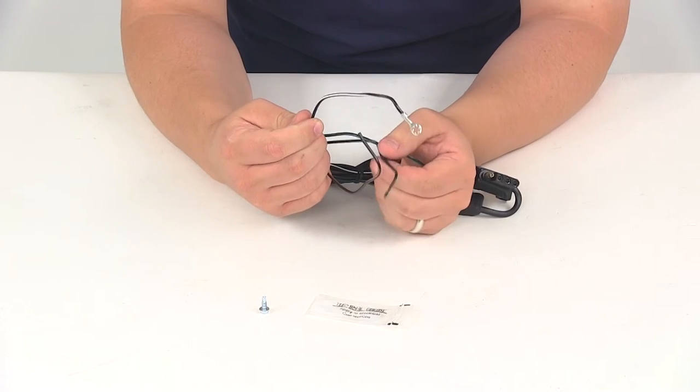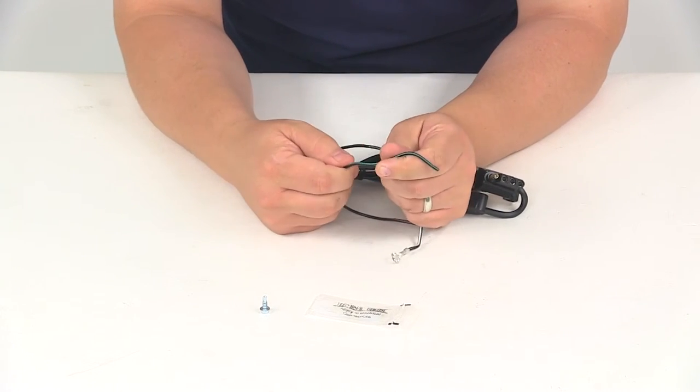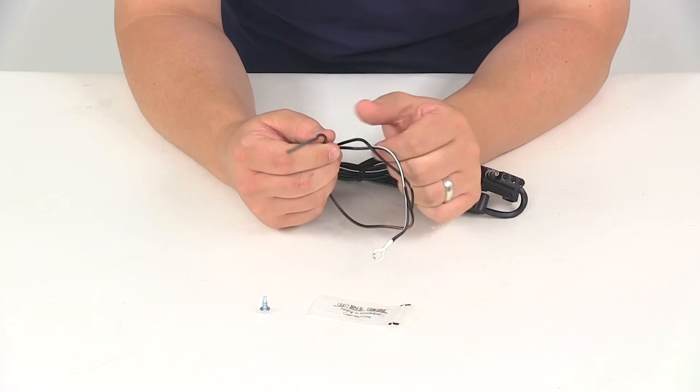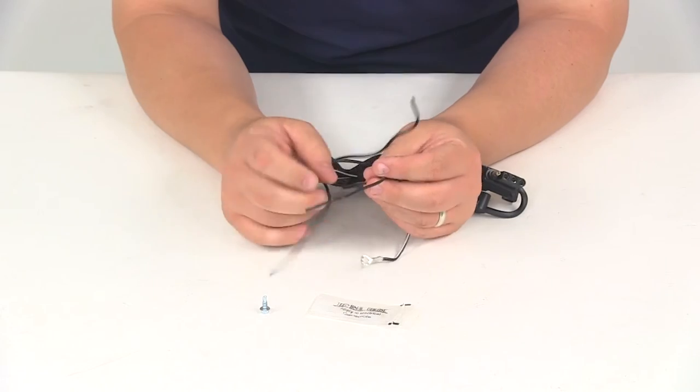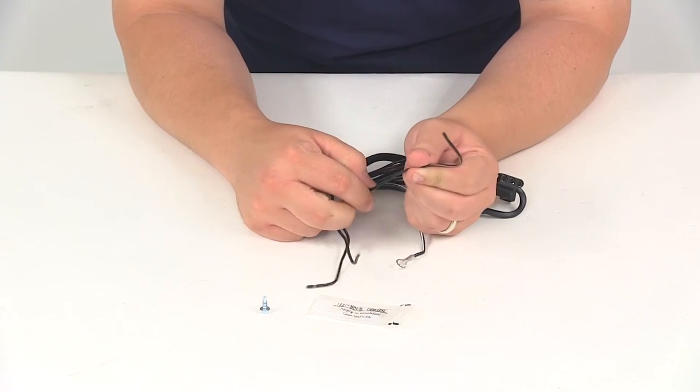The black wire with the green stripe is for your right turn and brake signal. The black wire with the yellow stripe is for left turn and brake, and the black wire with the brown stripe is for your tail lights.